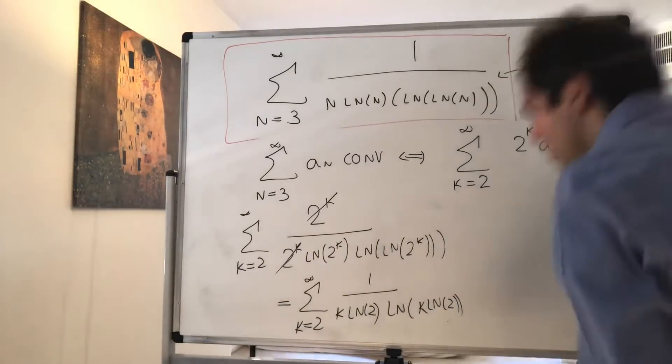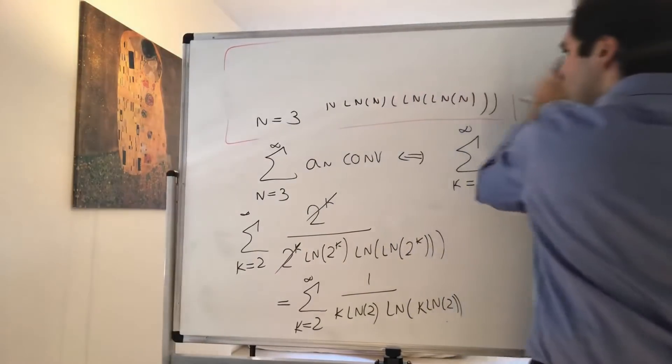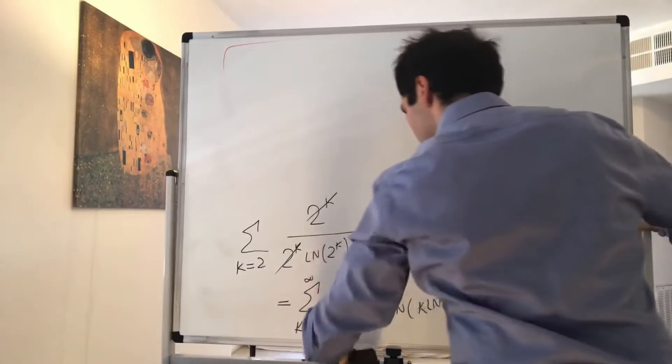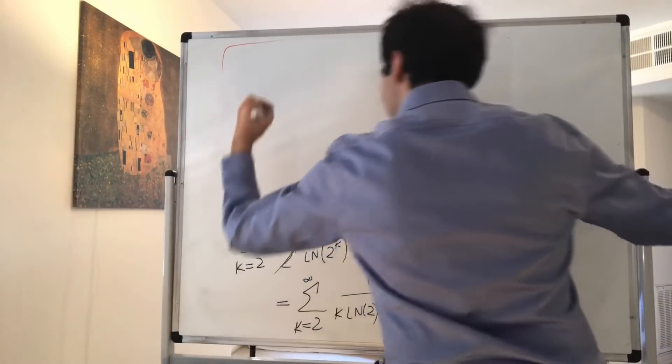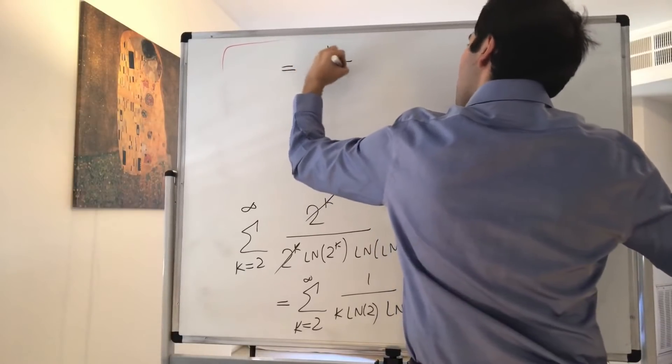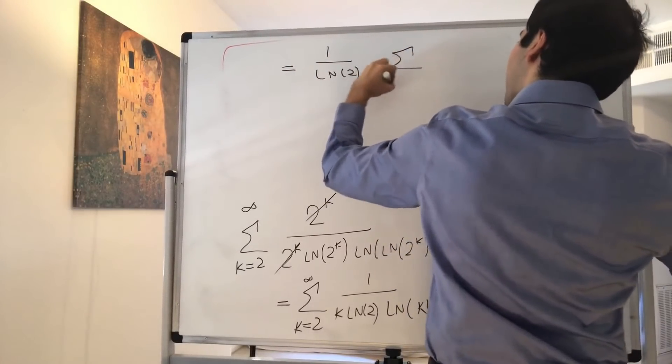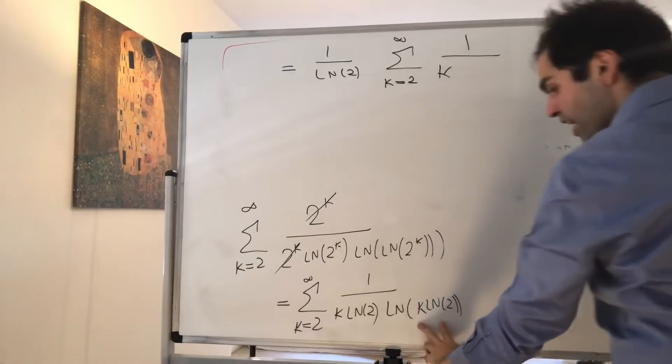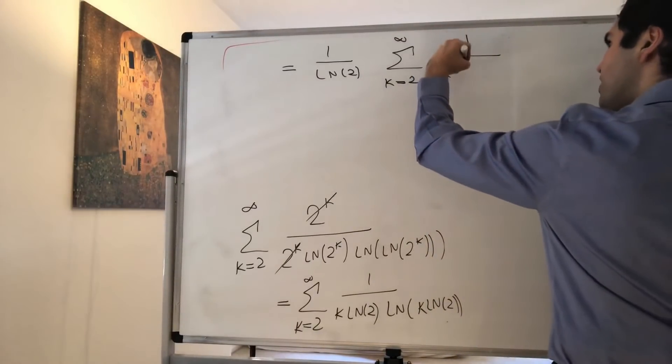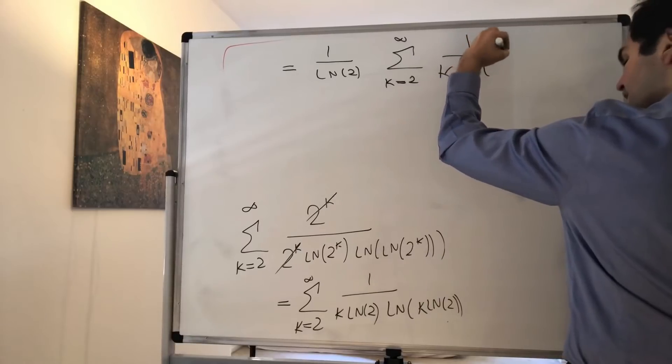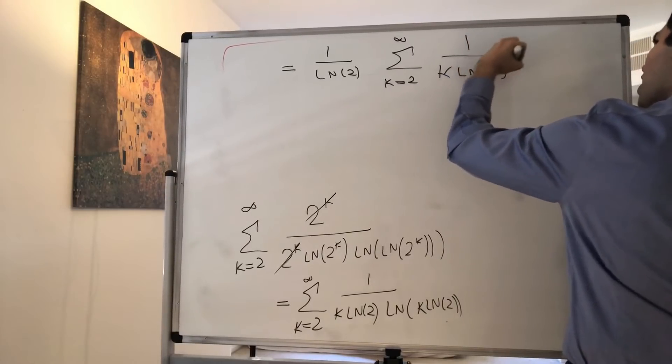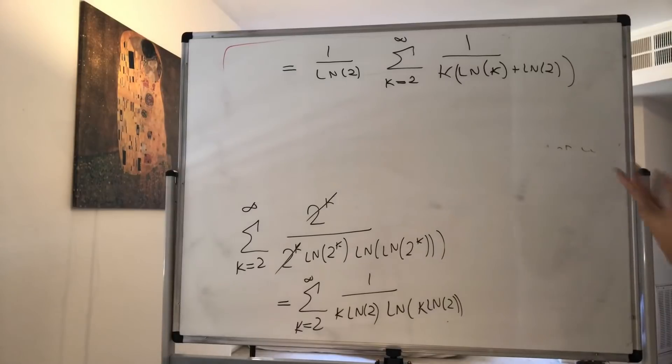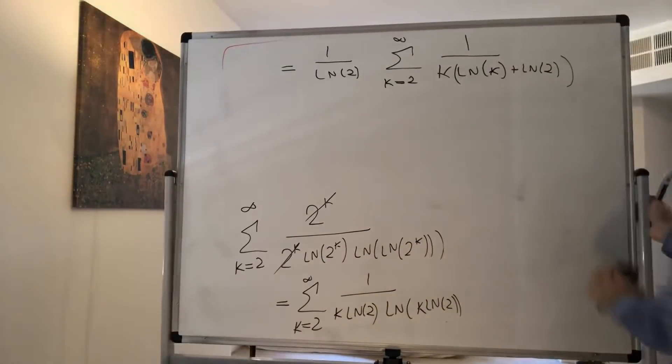And then, the nice thing is the ln of 2 comes out, so what we get is 1 over ln of 2, the sum from k from 2 to infinity of 1 over k. And then here again, we can use the logarithm property. So this becomes k ln of k, yeah, k ln of k plus ln of 2, like this in parentheses.